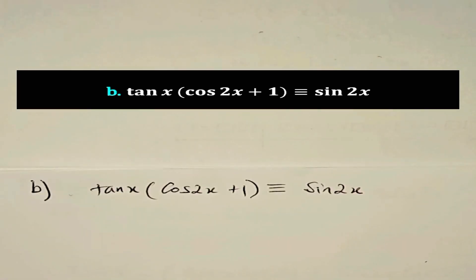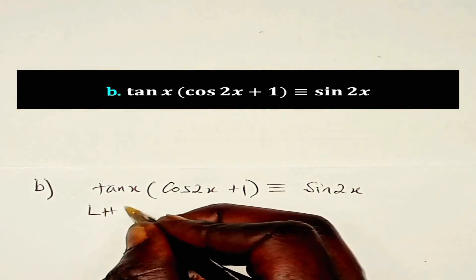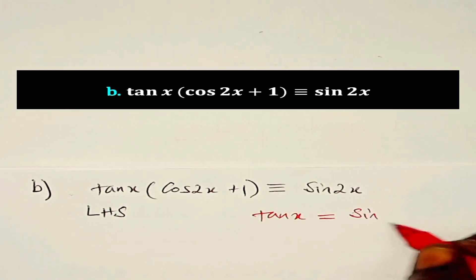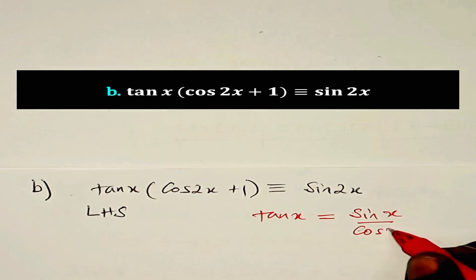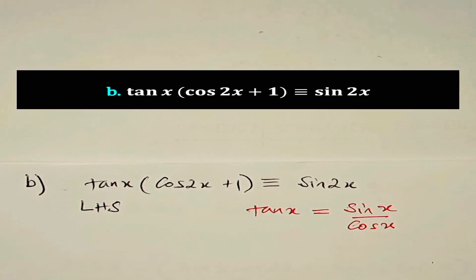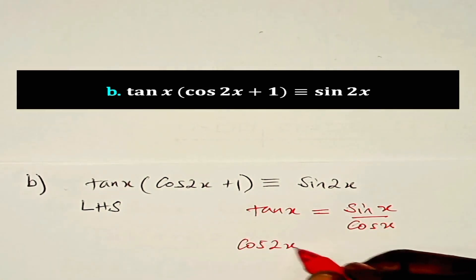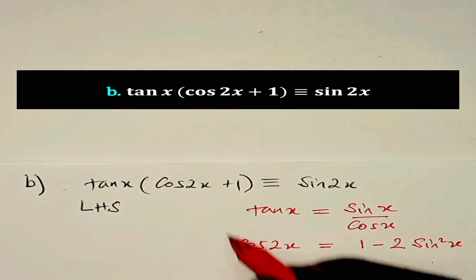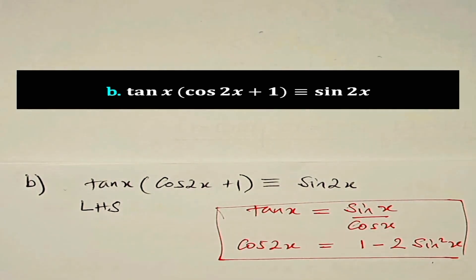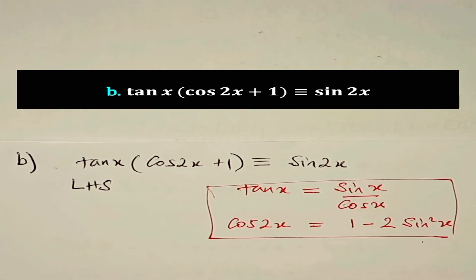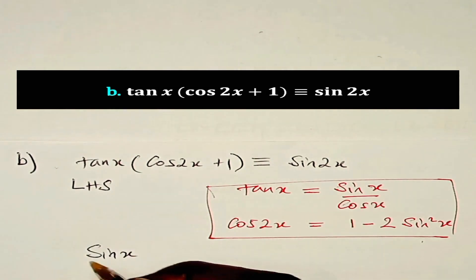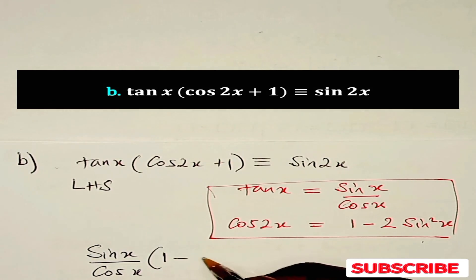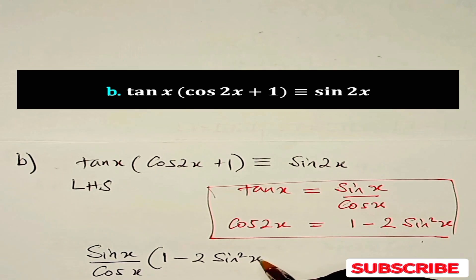Now let's look at part b. Let's consider the left hand side of this identity. We know that tan x can be written as sin x over cos x, and the double angle formula for cos is cos 2x equals 1 minus 2 sin²x. So we shall substitute these onto the left hand side, writing it as sin x over cos x multiplied by (cos 2x + 1), which is (1 minus 2 sin²x) plus 1.